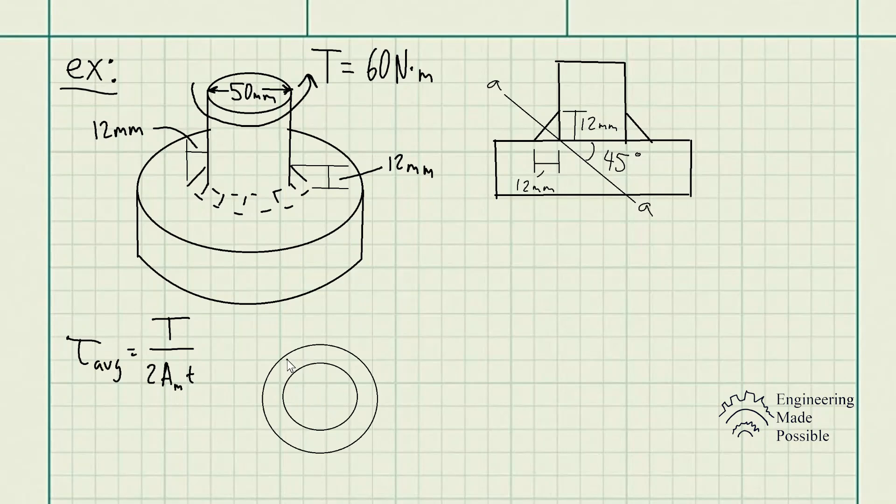Now looking at it from the top view, here we have that solid shaft and we have this fillet weld with the appropriate dimensions, 12 millimeters. So we can actually apply this equation to the fillet weld and we have the mean cross-sectional area. The mean area is pi r squared. In this case the radius is 31 millimeters, which gives us a mean cross-sectional area of 0.003019071 meters squared.